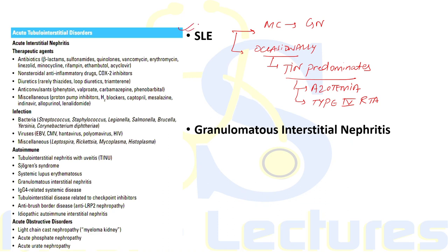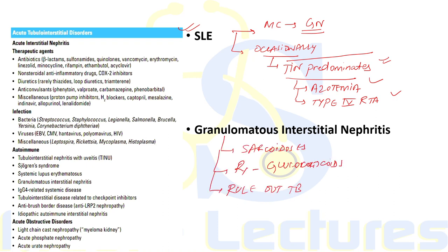In SLE, the most common renal lesion is glomerulonephritis with interstitial mononuclear infiltrate. Deposits in tubular basement membranes are seen in almost 50% of cases. Occasionally, tubular interstitial nephritis predominates without glomerulonephritis; these patients typically present with azotemia and type 4 renal tubular acidosis rather than features of glomerulonephritis.